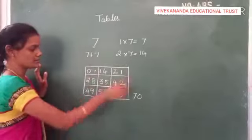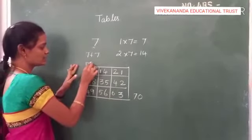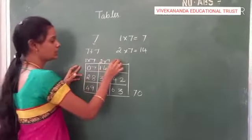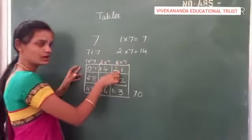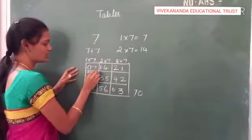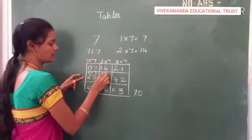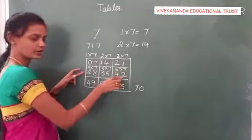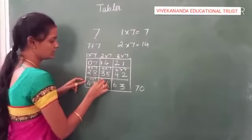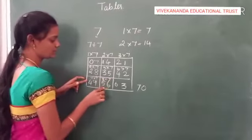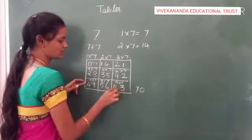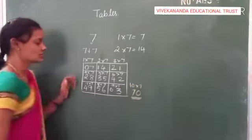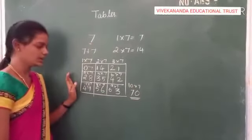Now we got 7 table. Let's check. 1 times 7 is 7, 2 times 7 is 14, 3 times 7 is 21, 4 times 7 is 28, 5 times 7 is 35, 6 times 7 is 42, 7 times 7 is 49, 8 times 7 is 56, 9 times 7 is 63. Finally 10 times 7 is 70. So this is how we can get the 7 table in an easy way.